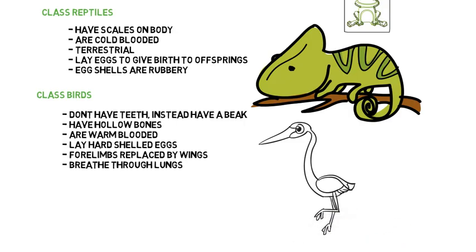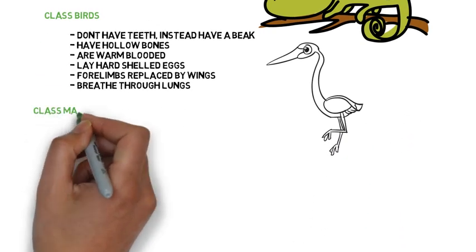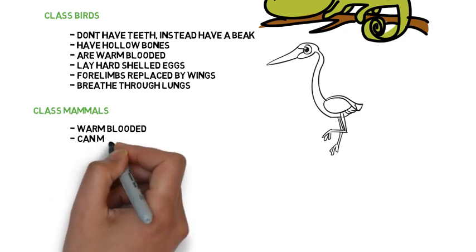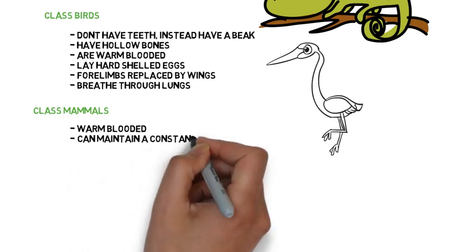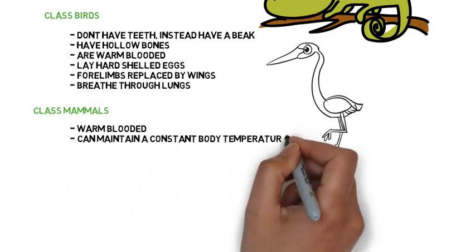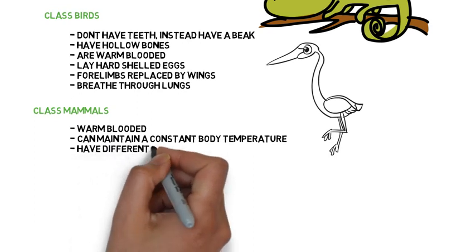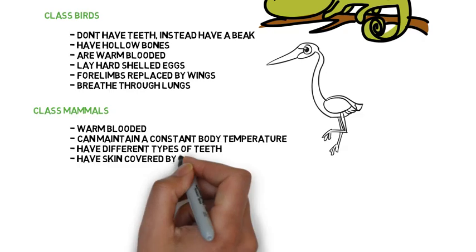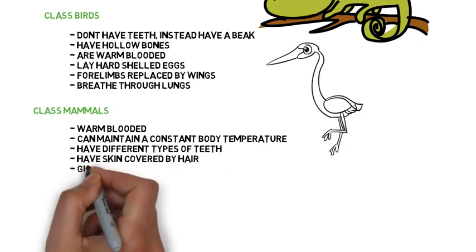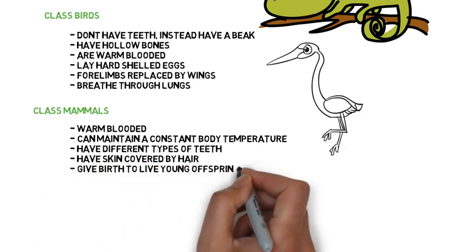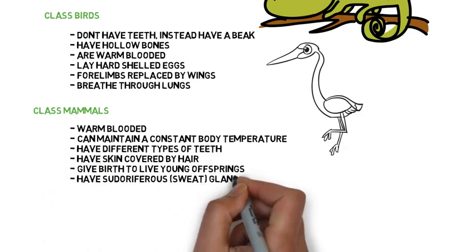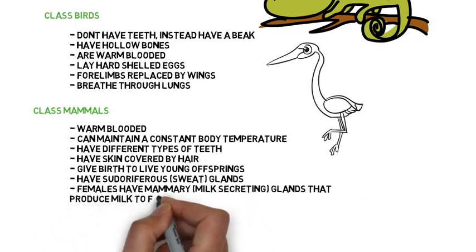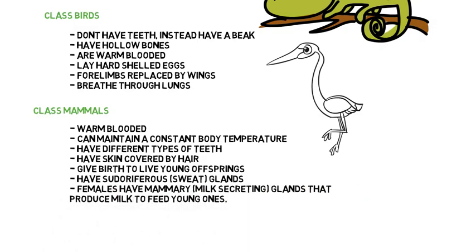Class Mammals. They are warm-blooded and can maintain a constant body temperature. They have different types of teeth and skin covered by hair. They give birth to live young offspring, have sudoriferous glands, and the females have mammary milk-secreting glands that produce milk to feed young ones. An example, of course, is the human being.